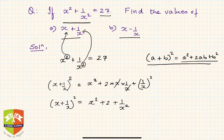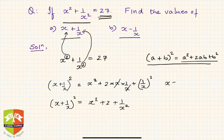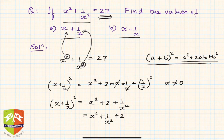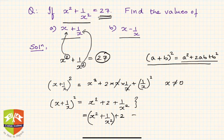Ideally it should be stated that x is not equal to 0. Assuming x is not equal to 0, you can cancel that. Obviously x cannot be 0 — if x is 0, the expression cannot equal 27. So clearly x is not equal to 0, and this cancellation is allowed. Division by 0 is not defined in mathematics. So the right-hand side becomes x squared plus 1 upon x squared plus 2. And x squared plus 1 upon x squared is already given as 27.